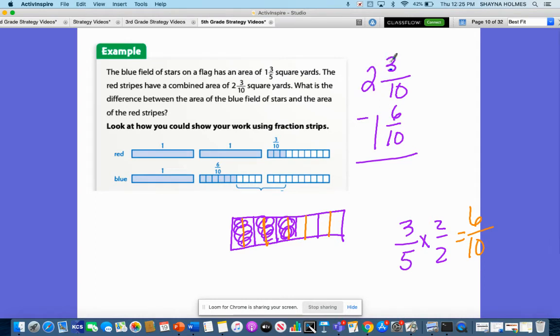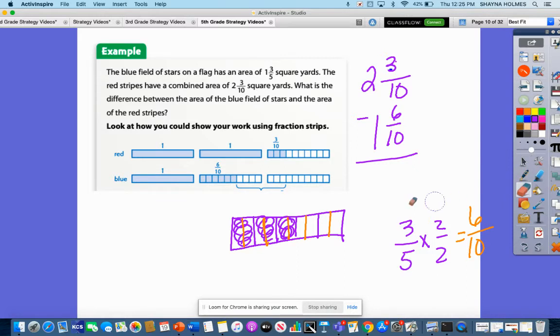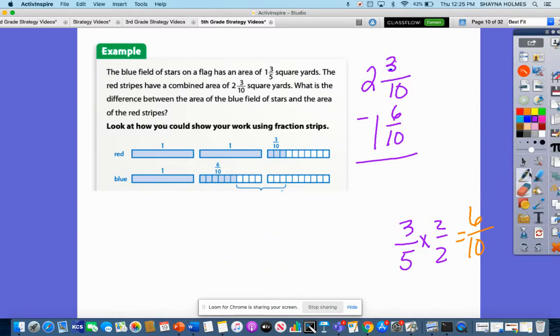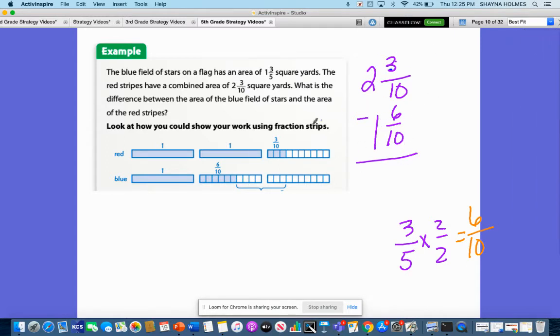But I still have a problem here. I've got 2 and 3 tenths minus 1 and 6 tenths. So I have a 3 here and a 6 here and I cannot take 3 tenths and subtract 6 tenths from it. So that's why this bar model is going to come in really handy when trying to subtract fractions like this where you're going to essentially have to borrow.